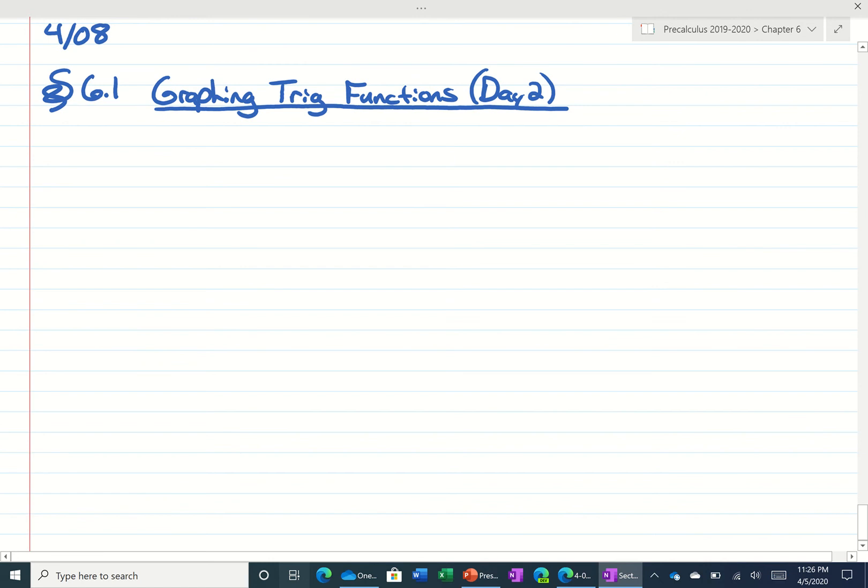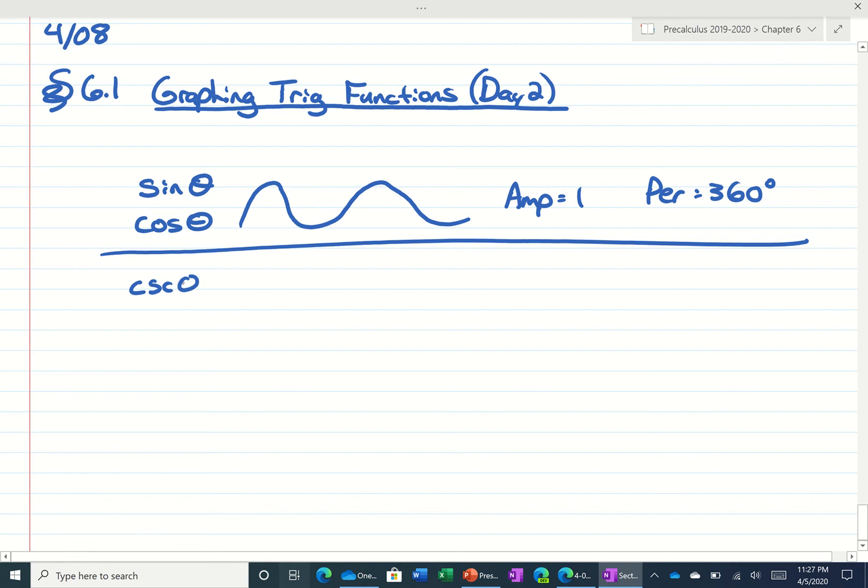We talked about this before. We know that sine and cosine look like waves, the amplitude is one and the period is 360. We know that cosecant and secant are alternating parabolas. There is no amplitude, I don't want you to say zero, I want you to say none, and the period for these are 360.